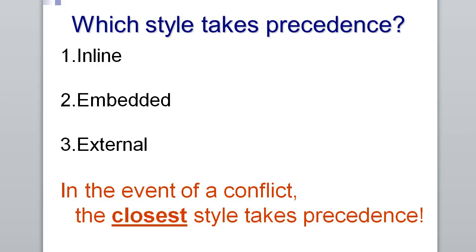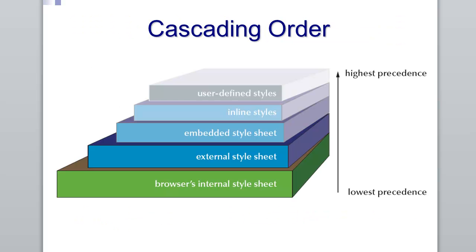The closest style takes precedence. So here we have our cascading order of precedence, which is why it is called cascading style sheets.